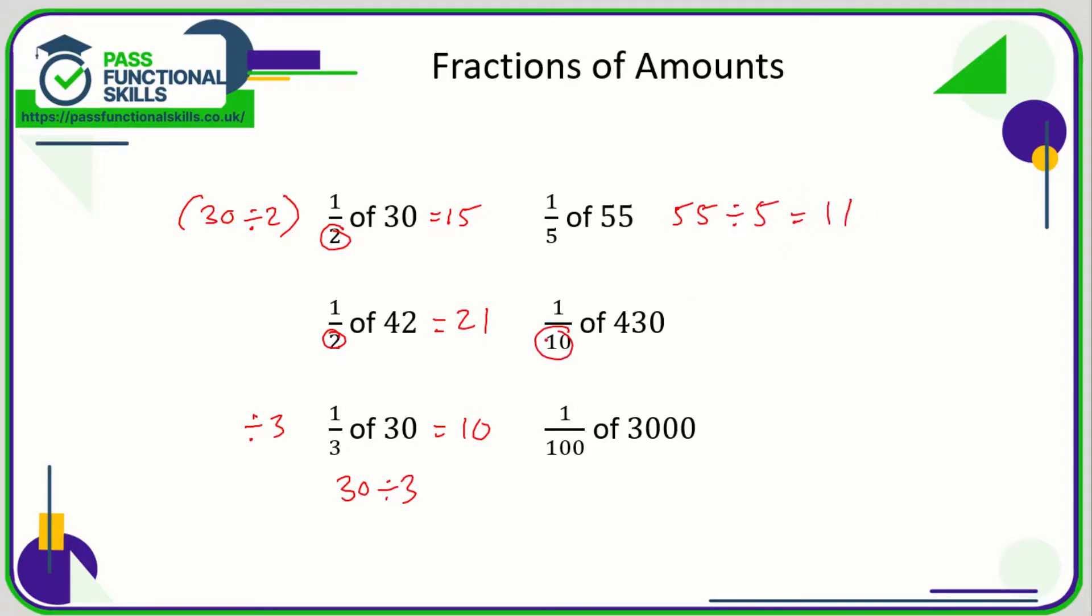A tenth of something means we're just going to be dividing by 10, and in this case dividing by 10 is as easy as chopping off the 0. 430 divided by 10 which is 43.